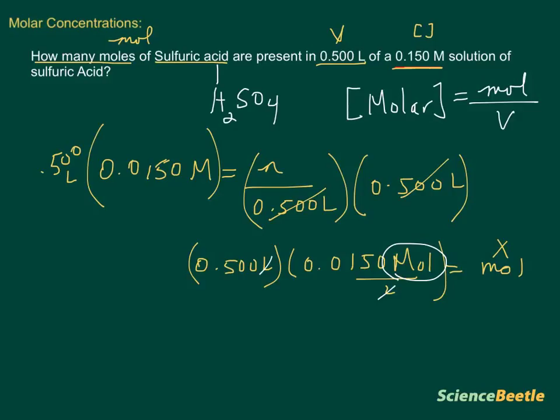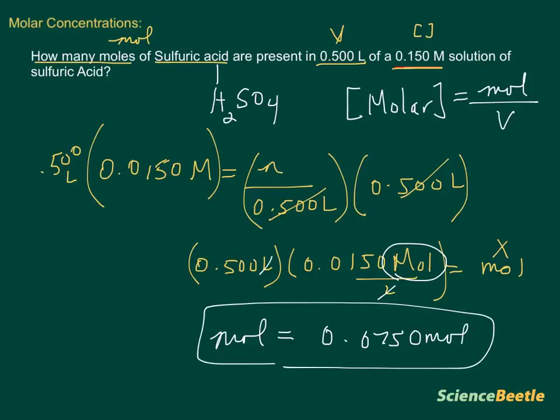The number of moles is 0.0750 moles. This is the answer for this problem. How many moles of sulfuric acid are present in 0.500 liters of 0.150 molar solution? 0.075 moles.